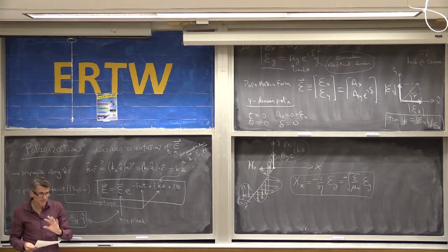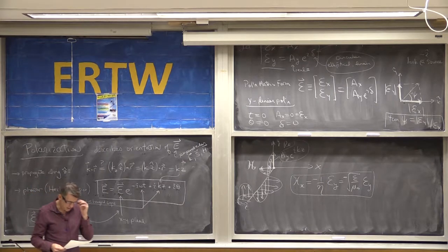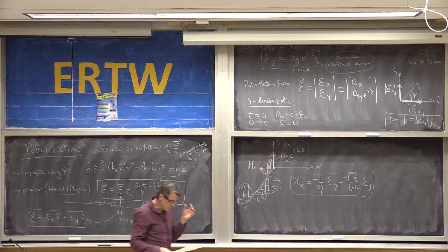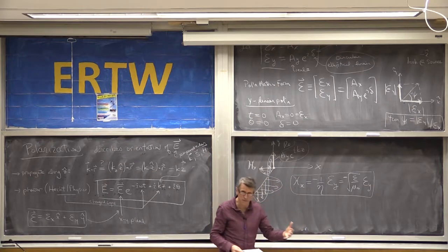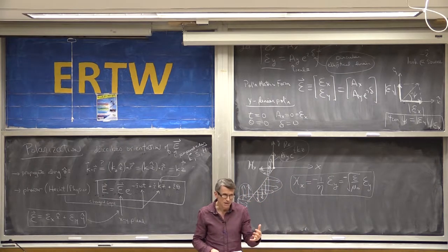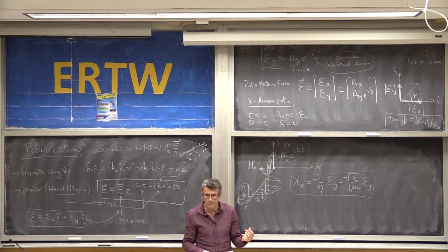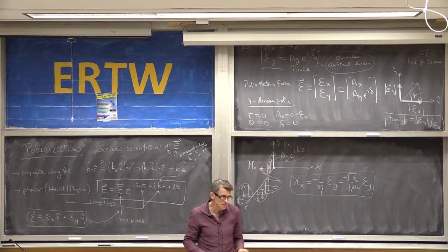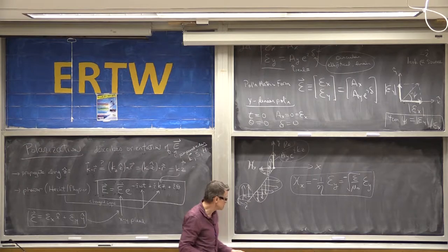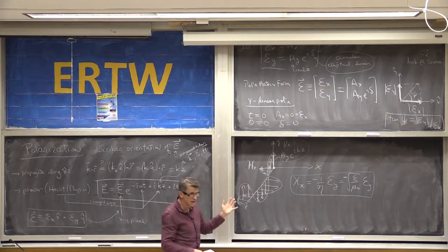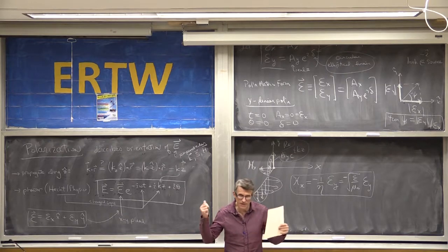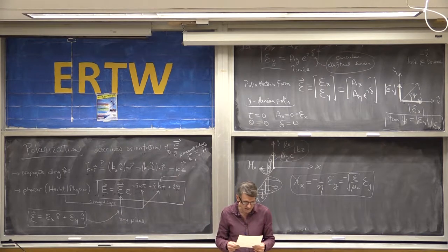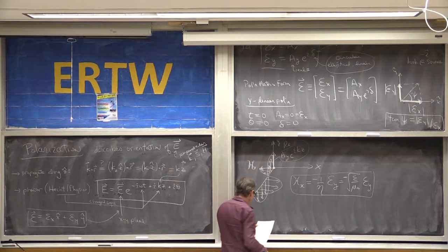We'd like to reduce the description of polarization so it doesn't depend on how powerful the electromagnetic wave is. The electromagnetic wave could be one volt or two million volts per centimeter and the polarization could be the same. If I have linear polarization along the y-axis, I'd like a formalism independent of the power or intensity of the field. That requires that we normalize the E vector.